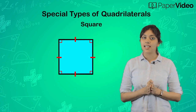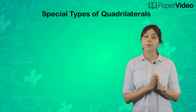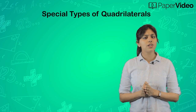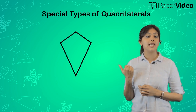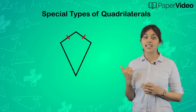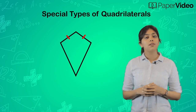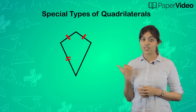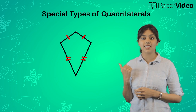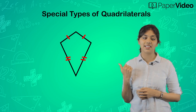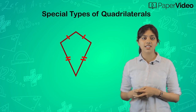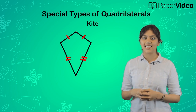There is another type of quadrilateral which is different from a trapezium and a parallelogram. In this quadrilateral, two pairs of adjacent sides are equal in length — these two adjacent sides are equal in length, and these two adjacent sides are equal in length. What do we call such types of quadrilaterals? They are known as a kite.